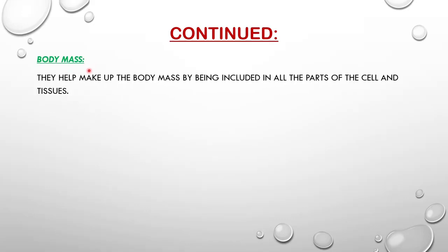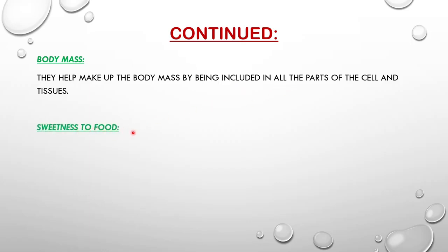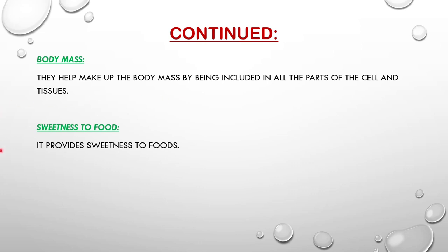Body mass is another application - carbohydrates help make up the body mass by being included in all parts of the cell and tissue. As carbohydrate is needed by all cells and tissues of the body, eating it helps to build body mass by boosting energy and providing energy to the cells and tissues. Sweetness of food is also an important role - carbohydrates provide sweetness to food.